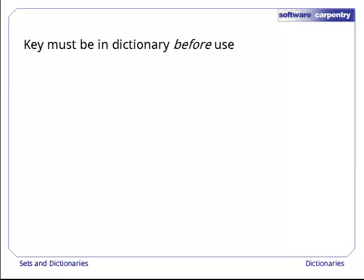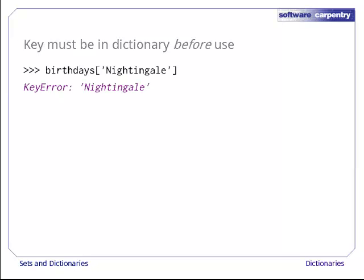If a key isn't actually in a dictionary, trying to read its value is an error, just like trying to read off the end of a list. For example, if we try to find Florence Nightingale's birthday with birthdays at Nightingale, Python reports a key error.